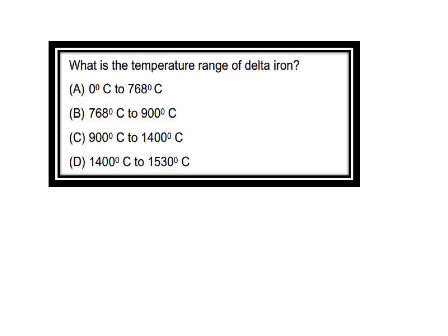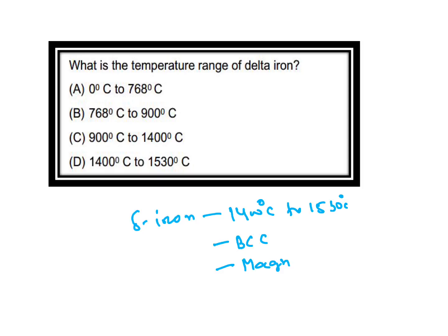What is the temperature range of delta iron? Delta iron temperature range is 1400°C to 1530°C. It has a BCC structure and it is magnetic.